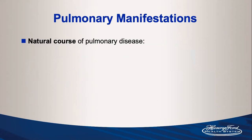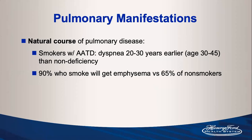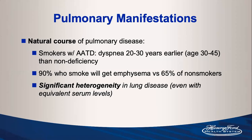Smokers with alpha-1 antitrypsin deficiency present 20–30 years earlier with shortness of breath and emphysema than typical COPD — around age 30–40 instead of the 50s or 60s. About 90% of those with alpha-1 who smoke will get emphysema, as will approximately two-thirds of non-smokers. There is significant heterogeneity; even patients with equivalent serum levels may have vastly different symptoms, imaging, and PFTs. Patients generally progress faster than typical COPD, with a subset of rapid decliners showing significant FEV1 decline.